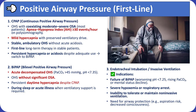Bi-level positive airway pressure is indicated for acute decompensated OHS, persistent hypercapnia despite CPAP use, or in patients without significant obstructive sleep apnea, as it provides additional ventilatory support. Endotracheal intubation with invasive mechanical ventilation is reserved for cases of BiPAP failure, severe hypoxemia, respiratory arrest, or inability to protect the airway, ensuring adequate ventilation and oxygenation during critical illness.